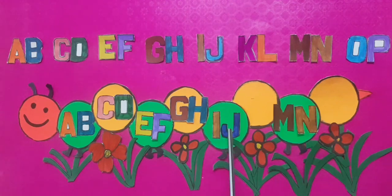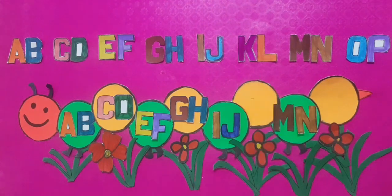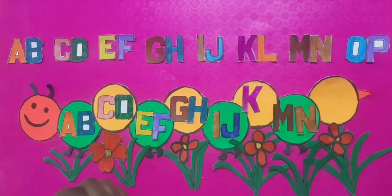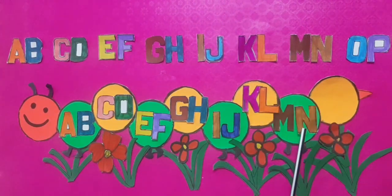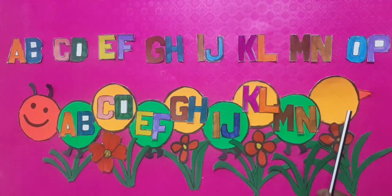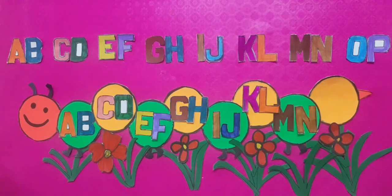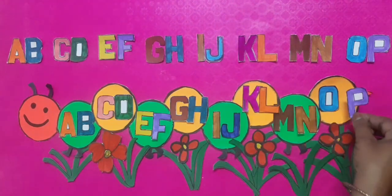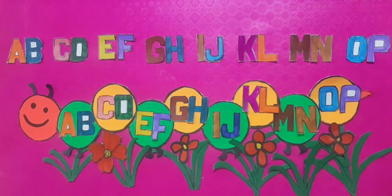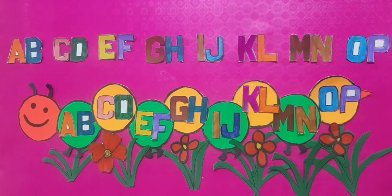I, J. What will be next? After I, J, yes, it's K, L. K, L. M, N. In the last box we will fill — yes, O, P. O, P. So students, these letters are like a pattern.